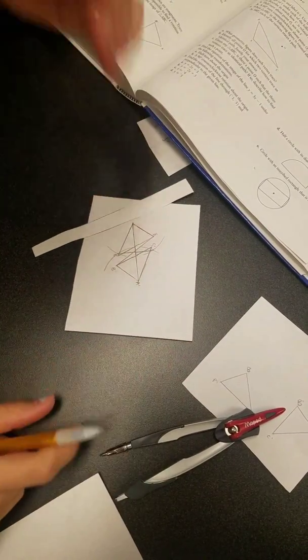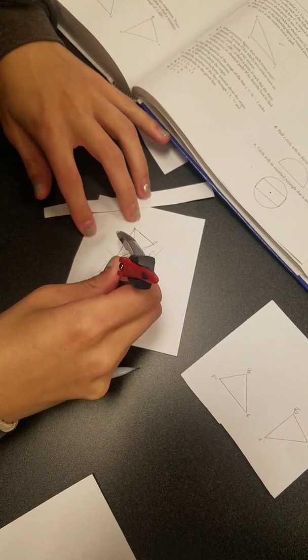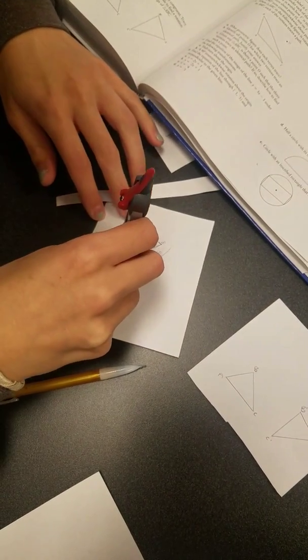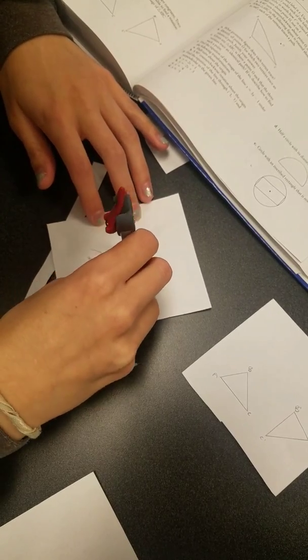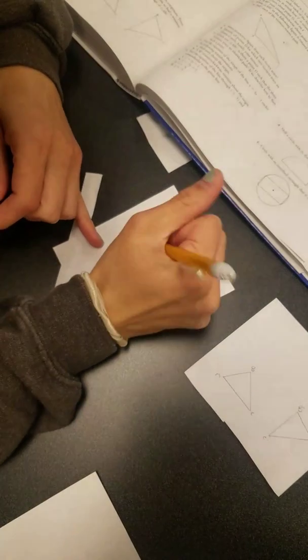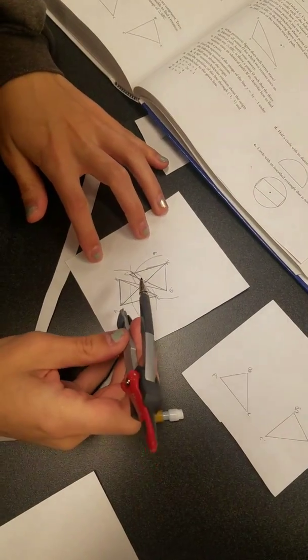And now we are going to do the same thing with our compass for B prime and B. So we're going to draw our arcs. And then I'm just going to label that arc so we know which one we are working with since there's kind of a lot of lines on the paper.